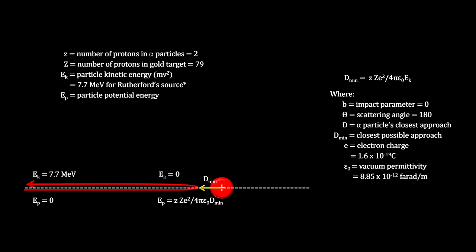Conservation of energy tells us that these two numbers must be equal. Rutherford's calculations show that the radius of a gold atom nucleus cannot be any larger than 0.00003 nanometers. That was 10,000 times smaller than the size of a gold atom.